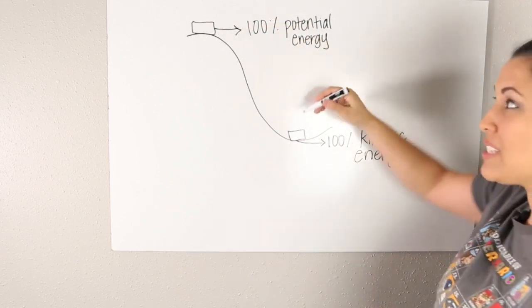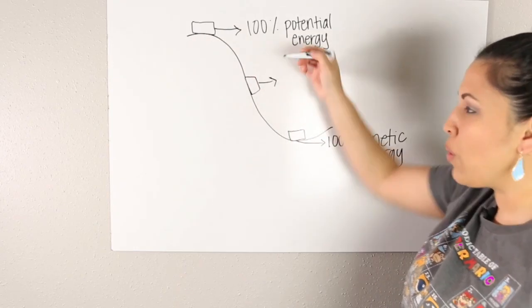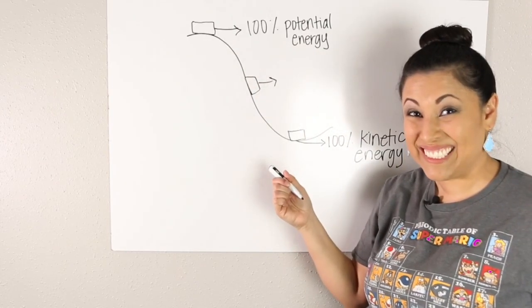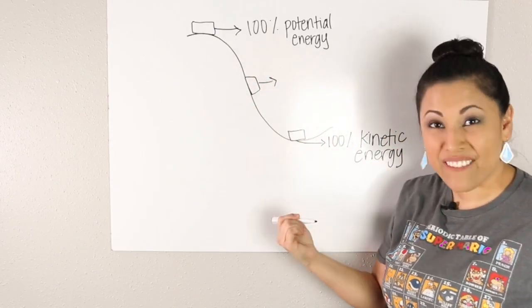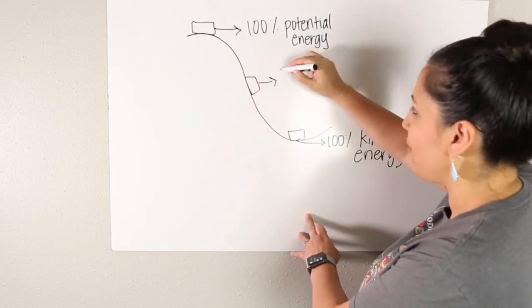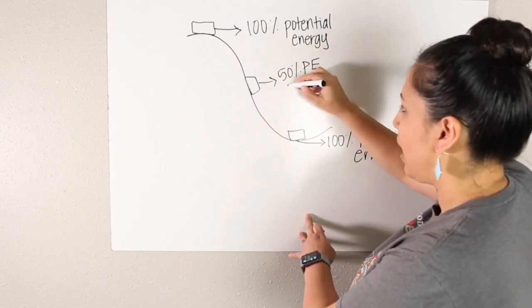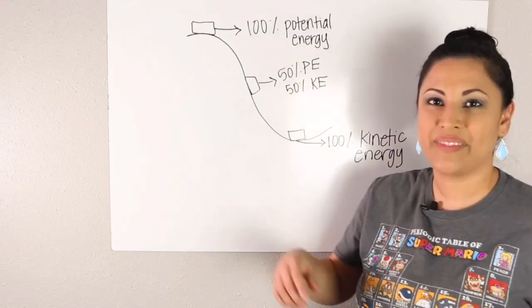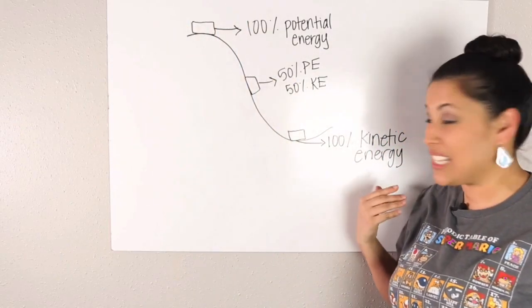Remember I said it's transferring. If we went halfway, what would our energy look like halfway in between these two? Did you guess it yet? We would have half potential, half kinetic energy since we're in between, right in the middle. Here we would have 50% potential energy and 50% kinetic energy. That is how our potential energy converts into kinetic energy.